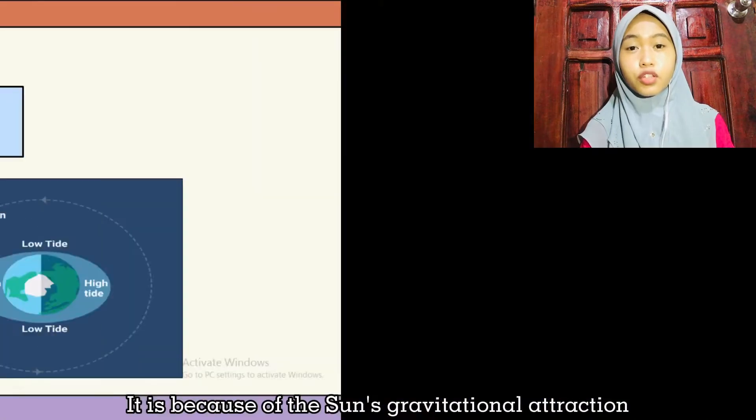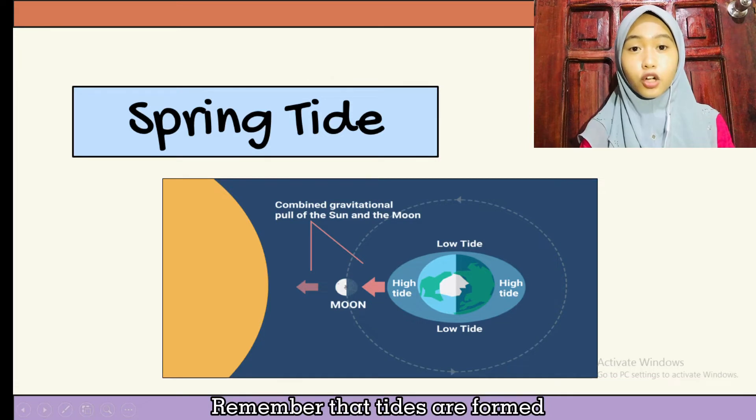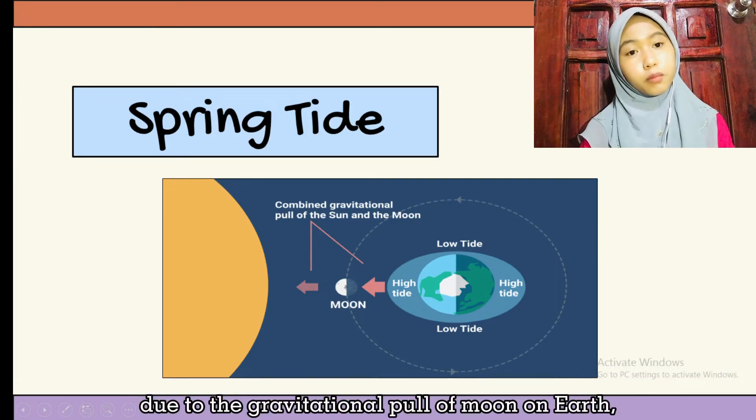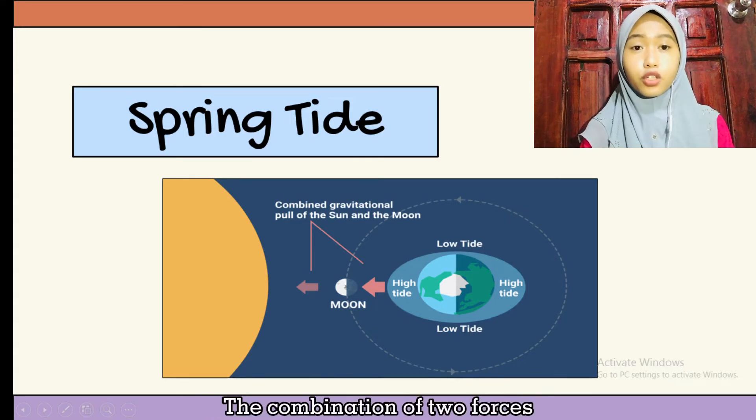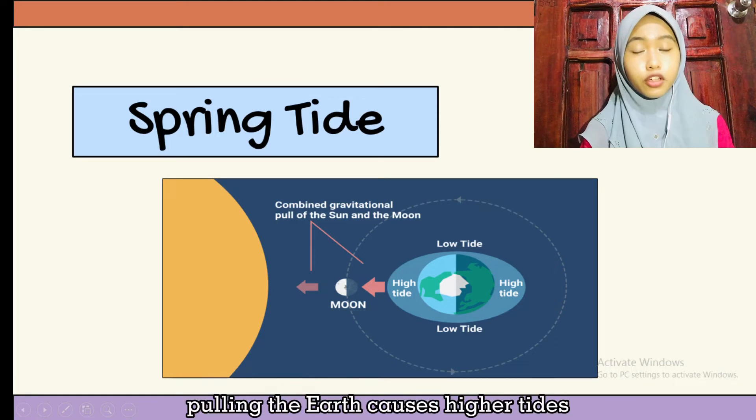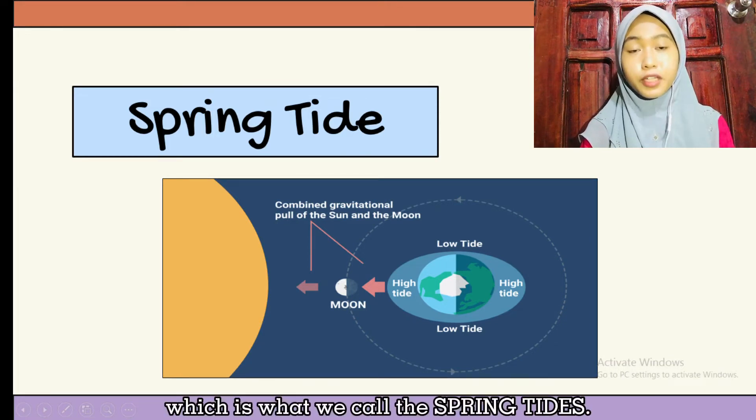This is because the Sun's gravitational attraction adds to that of the Moon. Remember that tides are formed due to the gravitational pull of the Moon on Earth and also the Earth's rotation. The combination of two forces pulling the Earth causes higher tides, which is what we call spring tides.